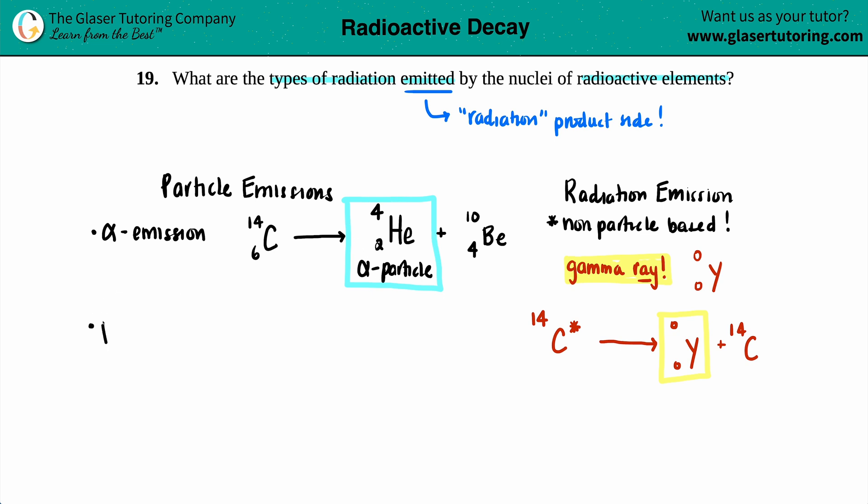Another one is beta emission. Beta emission is the same thing as talking about an electron. So you will be releasing an electron as your product. So whether you put a beta here or an electron, that's fine. Beta has a zero, negative one. It's really important to memorize these radioactive particles because it's going to be much easier when you start balancing your equations.